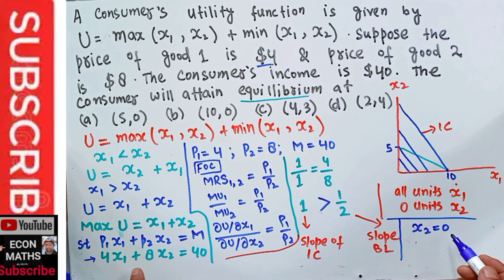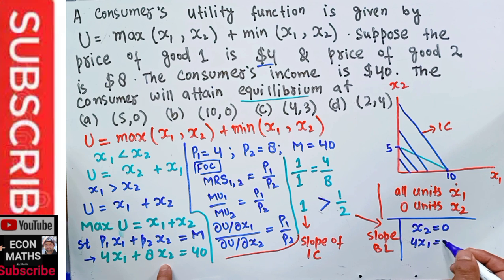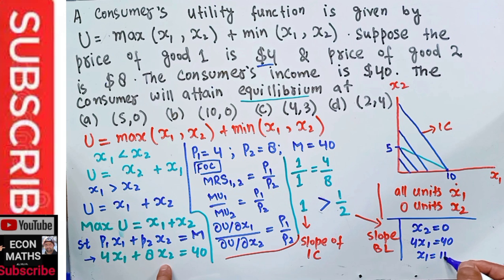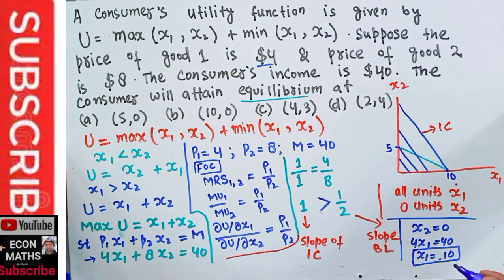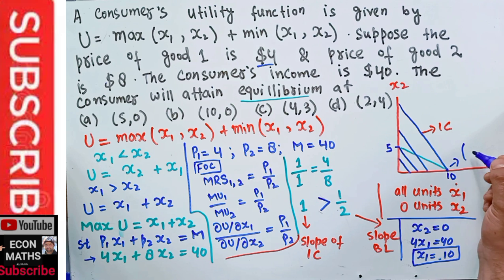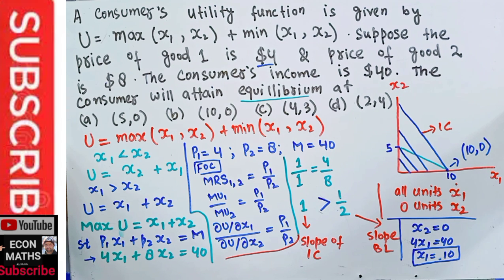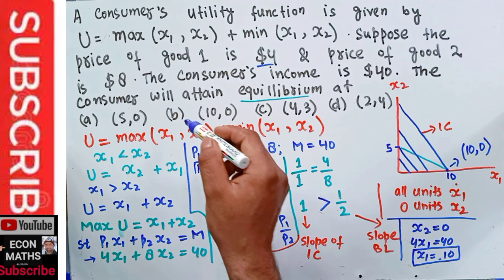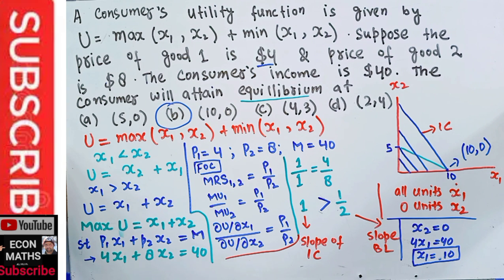Setting x2 = 0 in the budget constraint: 4x1 = 40, so x1 = 10. The consumer will consume 10 units of good x1 and 0 units of good x2. This is our optimal bundle, so the correct option is B.